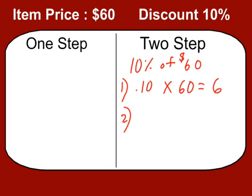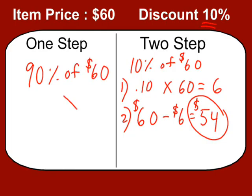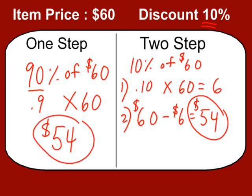Step two is to take the original price, which is $60, minus the $6 you're saving. So $54 would be the final cost of that item. Now if you wanted to do it in one step: if you're saving 10%, that means you have to pay 90% of the full price — 90% of the $60. 'Of' means multiply. Convert 90% into a decimal and multiply times $60. We end up with $54. Either way, you're going to get the same answer.